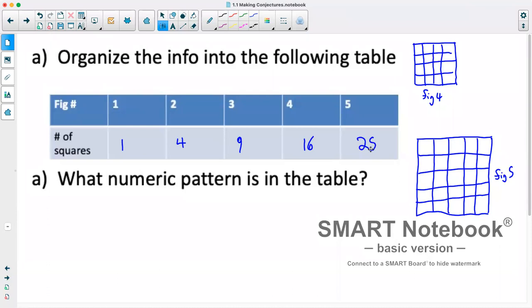So now we know what numeric pattern is in the table. So if we actually look at the figure number and compare to our number of squares, what we can see is our figure number squared gives us how many squares.